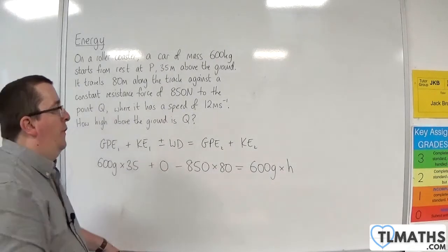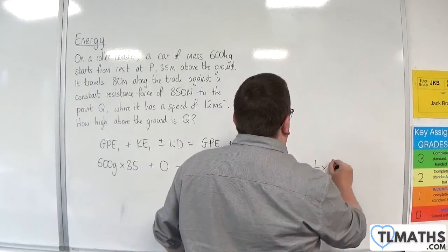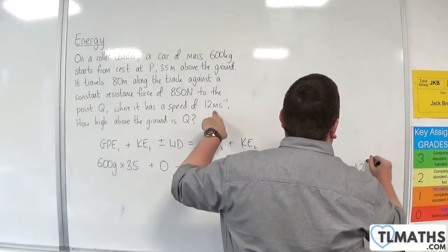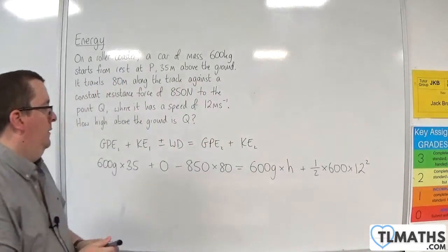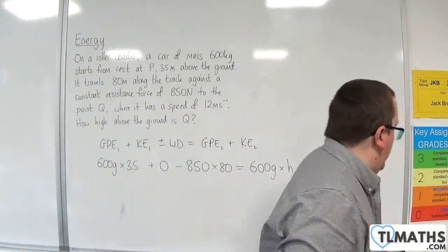And the final kinetic energy is 0.5 times M times V squared. Now, the final speed is 12 metres per second. So this gives me the H that I need.